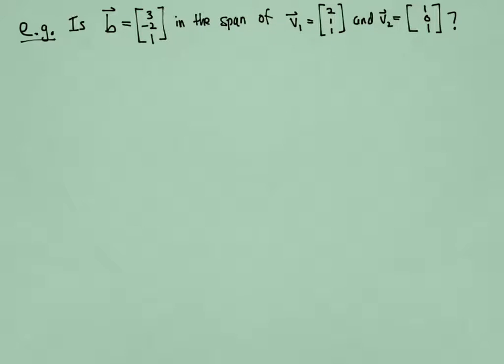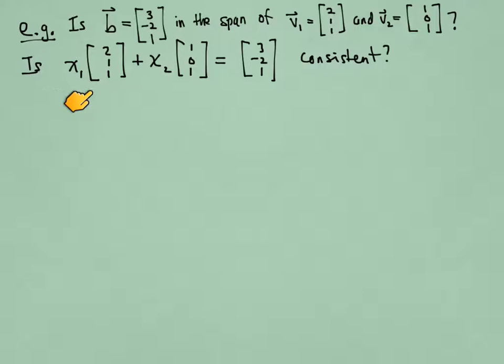So we'll just repeat the theory that we just developed in this specific example. The question now becomes, is x1 times my first vector plus x2 times my second vector able to equal my vector B, [3, -2, 1]? In other words, is this vector equation consistent? Is there a solution to it?